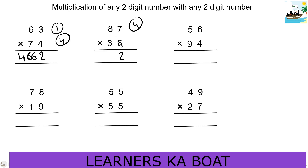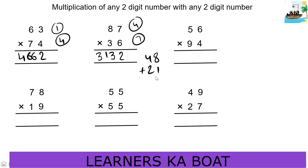Next: 8×6 is 48, plus 7×3 is 21, so 48 plus 21 is 69, plus carry 4 is 73. Write 3, carry 7. Next: 8×3 is 24, plus carry 7 is 31. So 2nd step: 8×6 is 48, plus 7×3 is 21 is 69, plus 4 carry is 73.